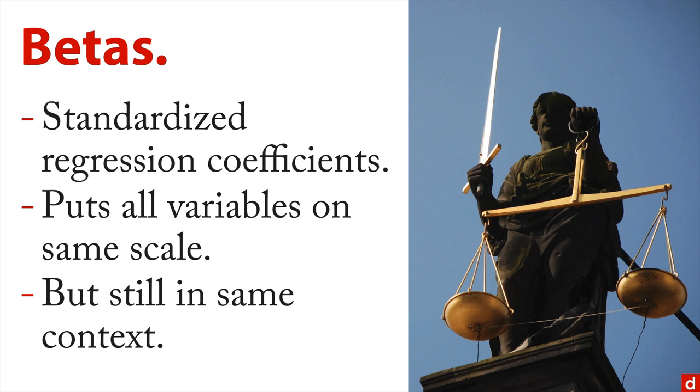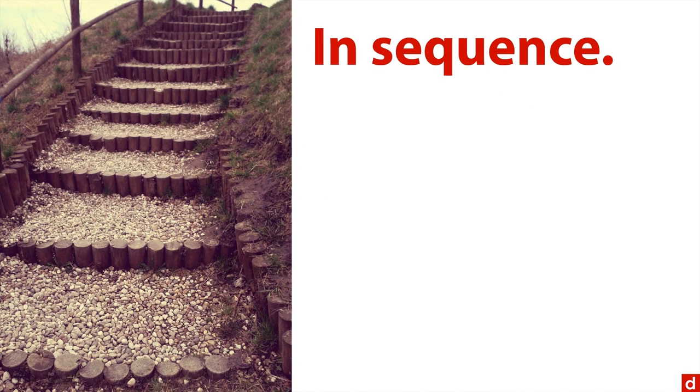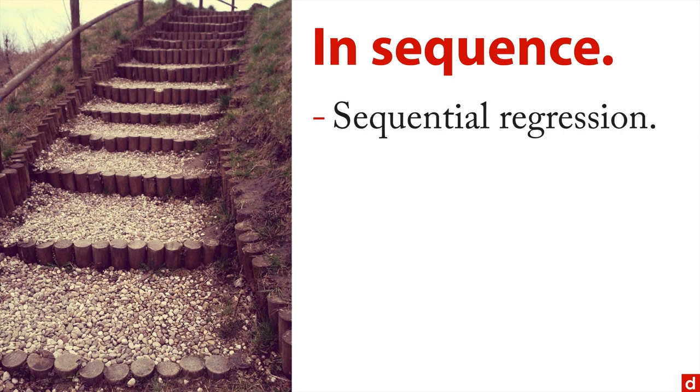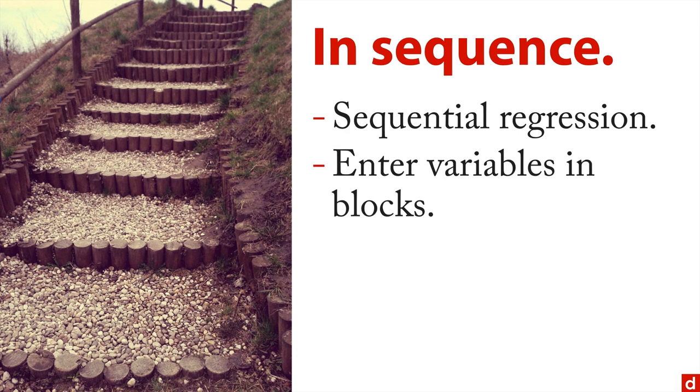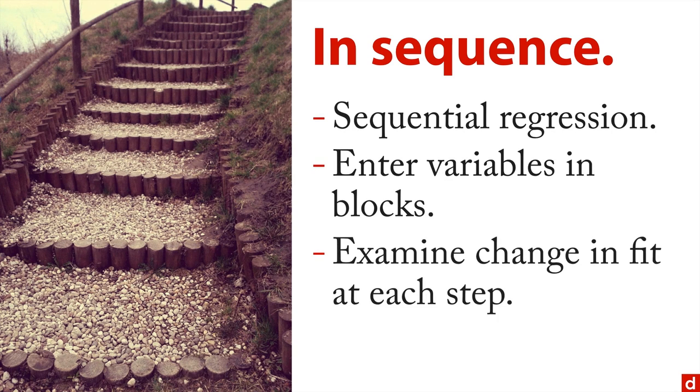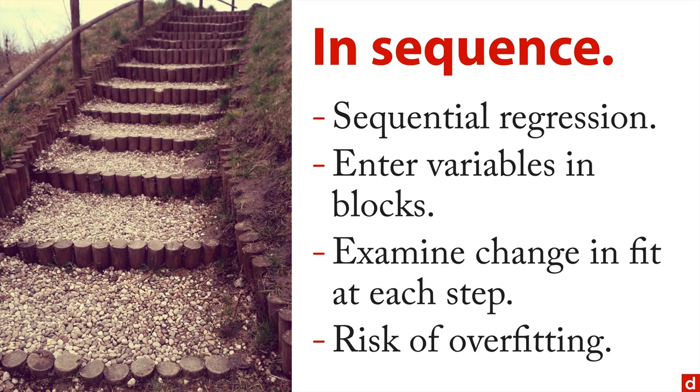So one way to try to get around that is to do what they call stepwise procedures, where you look at the variables in sequence. There are several versions of sequential regression that allow you to do that. You can put the variables into groups or blocks and enter them in blocks and look at how the equation changes overall. You can examine the change in fit at each step. The problem with a stepwise procedure like this is it dramatically increases the risk of overfitting, which again is a bad thing if you want to generalize your data.